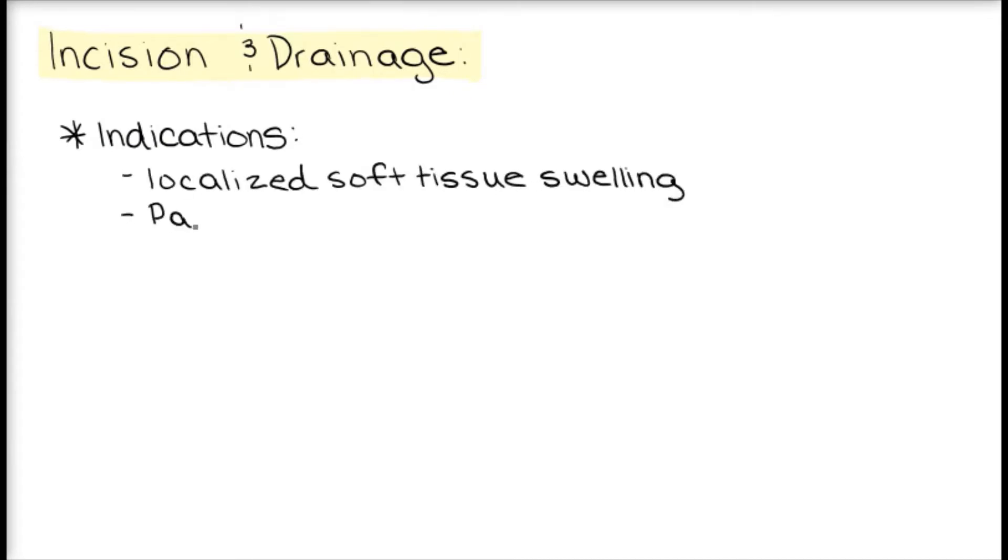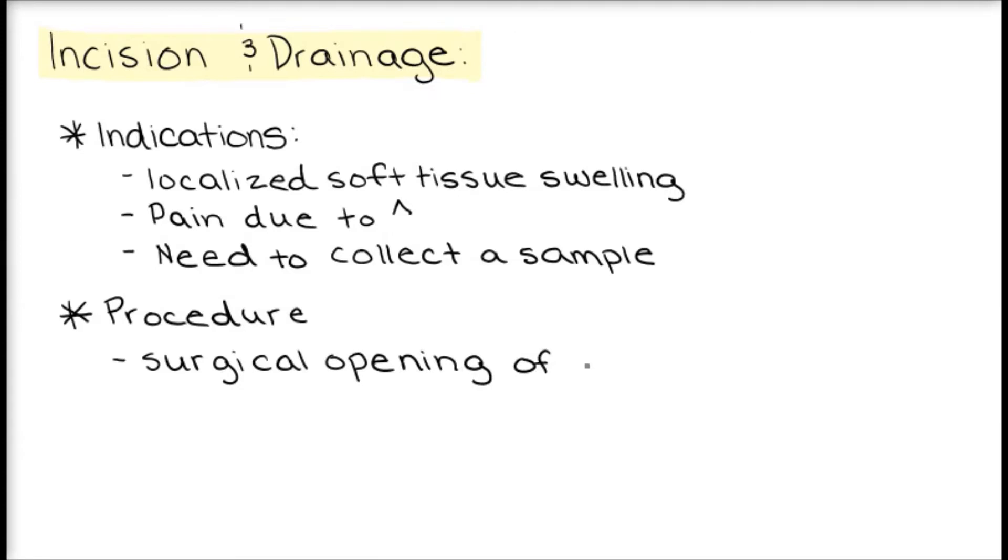The first procedure we'll take a look at is incision and drainage. This procedure is indicated when we have a localized soft tissue swelling and pain due to such swelling, which we expect will drain if incised. Additionally, this can be done to collect a sample, usually for bacterial analysis. The procedure involves surgically opening the soft tissue and can include the placement of a drain.